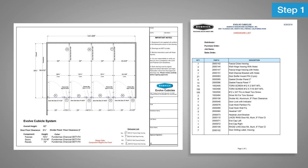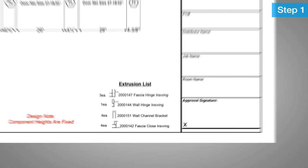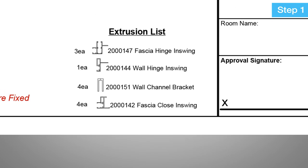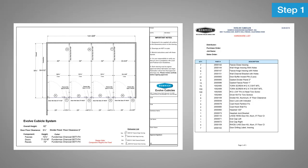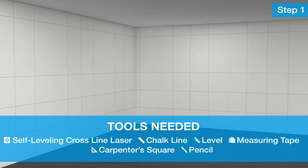To check the extrusion counts, refer to the layout drawings under Extrusion List for the part number and quantities. Then, organize and stage all the components and hardware needed for each room. Be sure to review the list of tools you will need to complete the installation, and obtain any that you don't have on hand before beginning.